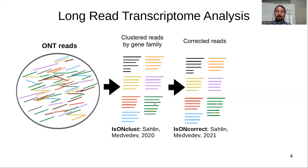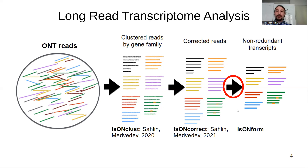In the next step, we correct the reads. Correcting means that we get rid of sequencing artifacts that may have been introduced to the data. This can be done using IsoNCorrect, introduced by Salin and Medvedev in 2021. The final step of our pipeline — the step I will now focus on — is the generation of non-redundant transcripts from those sets of corrected reads per gene family. This is the IsoNForm algorithm.